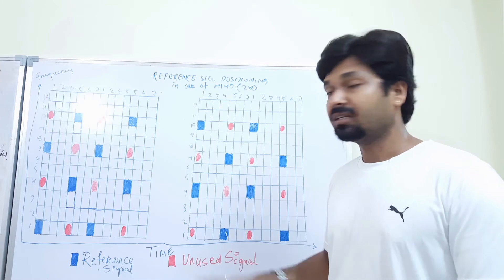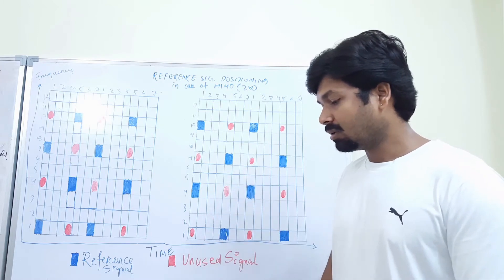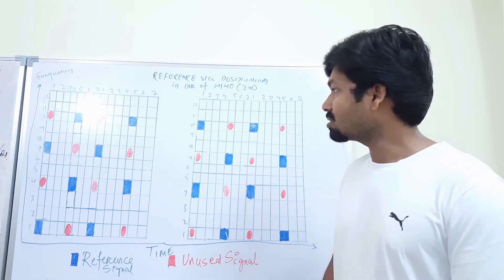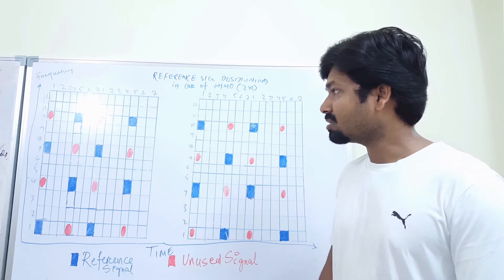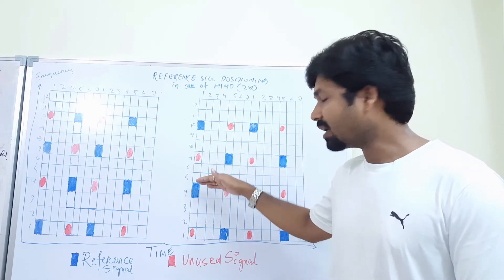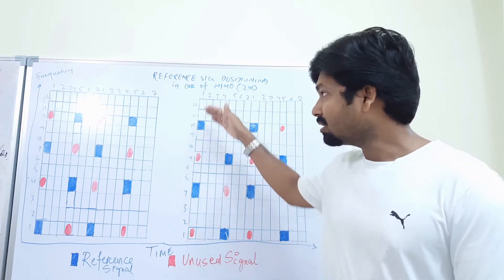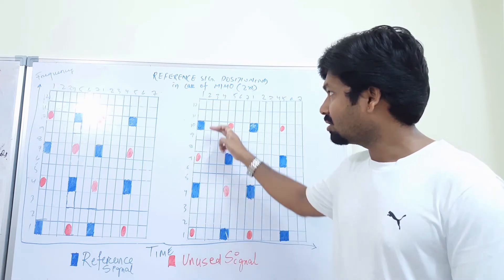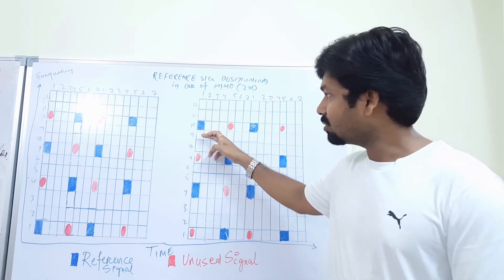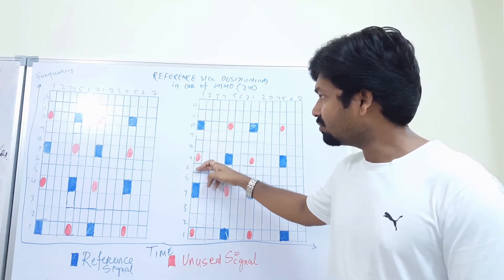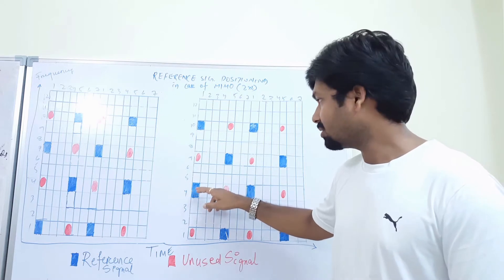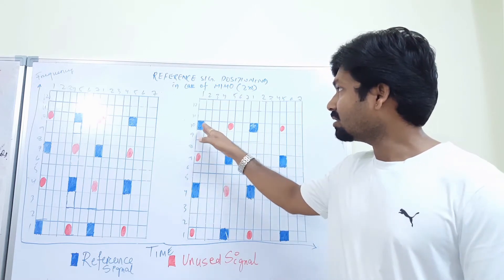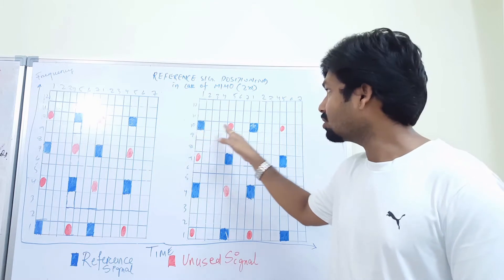We'll see in the grid what is the positioning of the reference signals, or RS, in case of LTE. Like I mentioned, we have three basic rules. Rule number one is we are having every sixth subcarrier in the frequency domain to transmit the reference signal — so if here it is transmitted, one, two, three, four, five, six subcarriers.